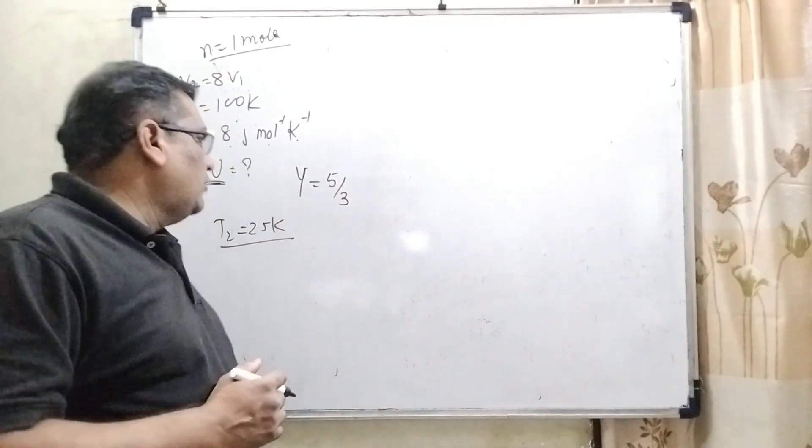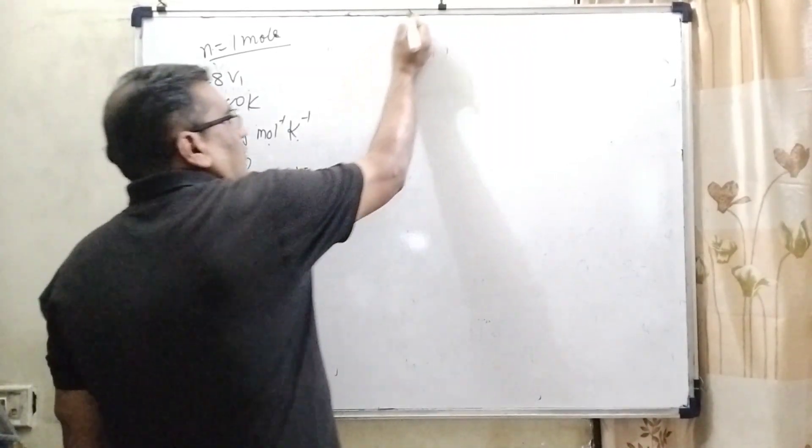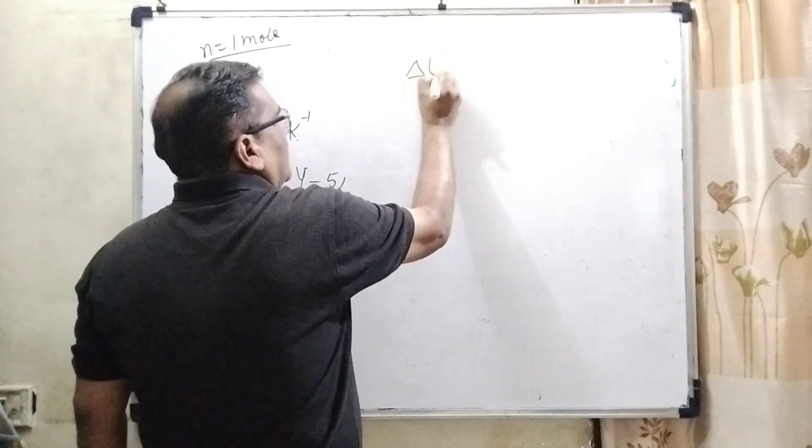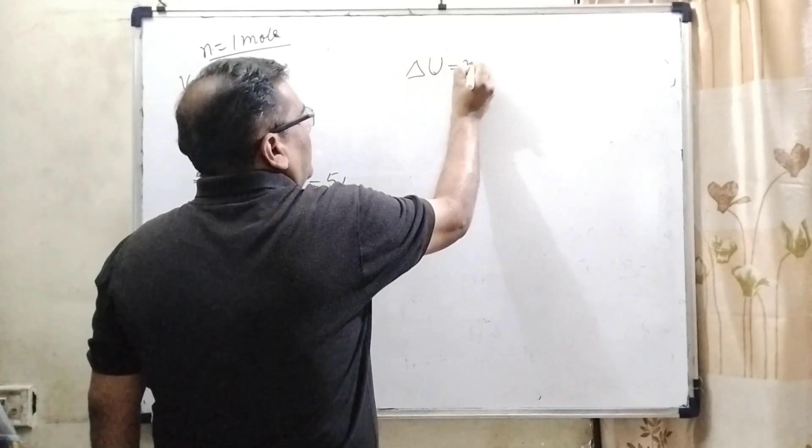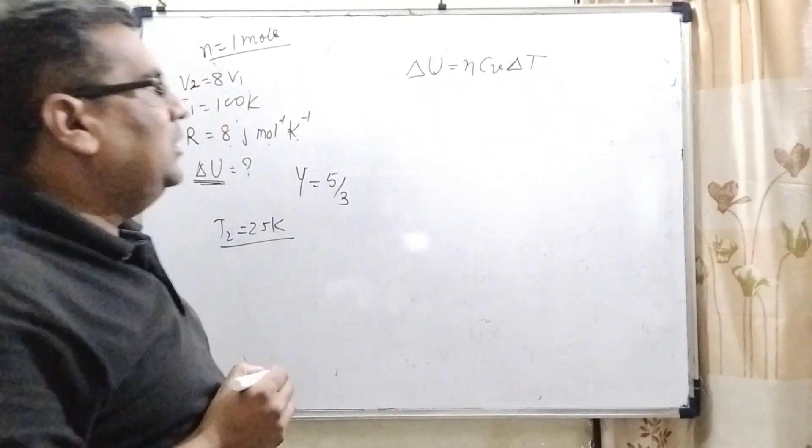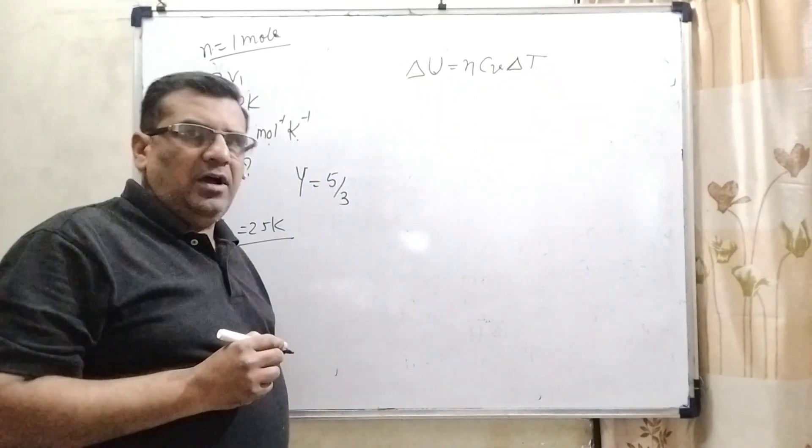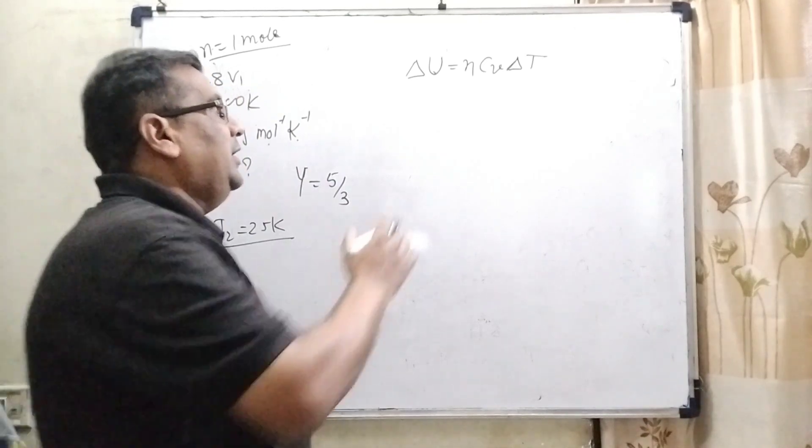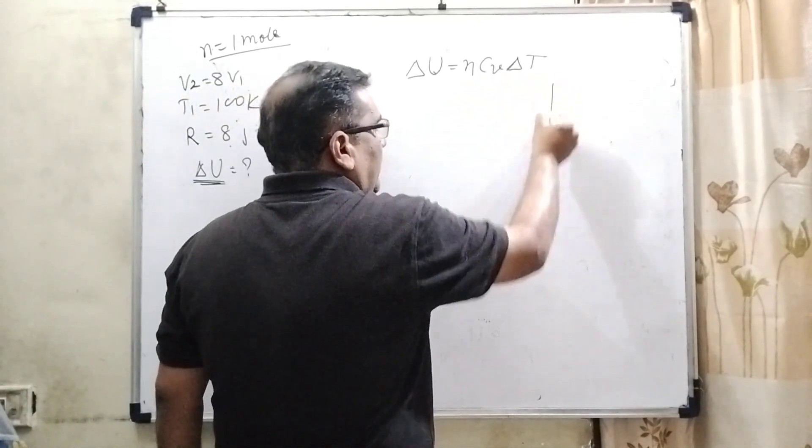Here we have to calculate internal energy. What is the formula of internal energy? Delta U equal to N Cv delta T. Here N is the number of moles. Cv is specific heat of gas at constant volume and delta T is temperature.